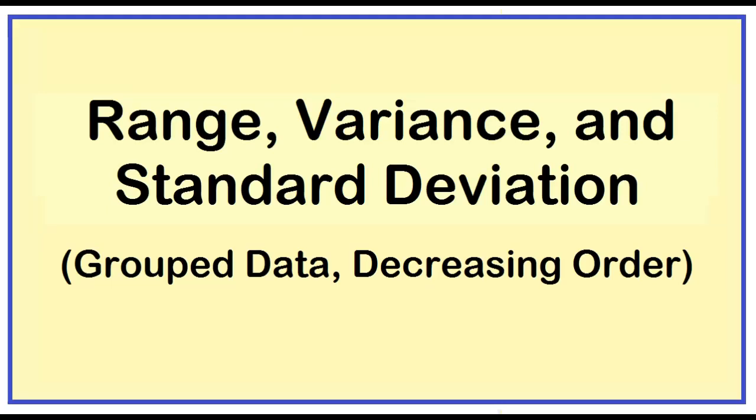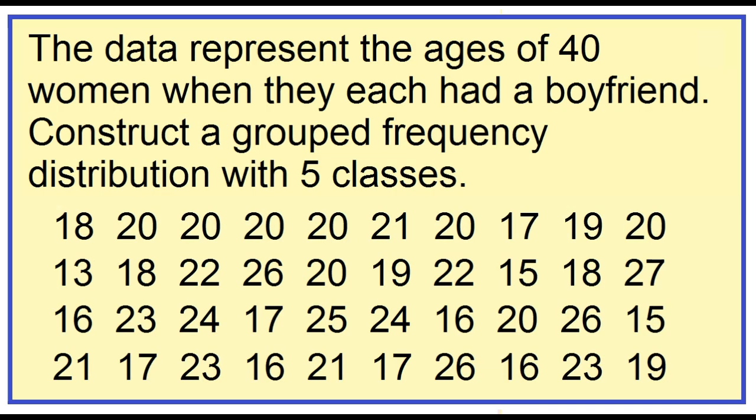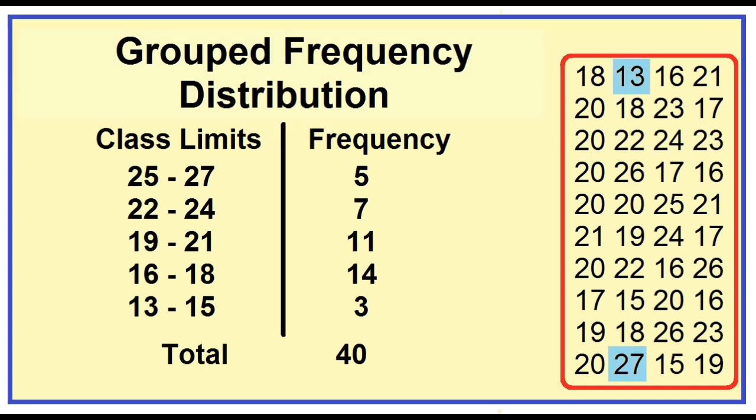How to find the range, variance, and standard deviation given grouped data in decreasing order. The data is all about the ages of 40 women when they each had a boyfriend. Based on the group data, find the range, variance, and standard deviation.